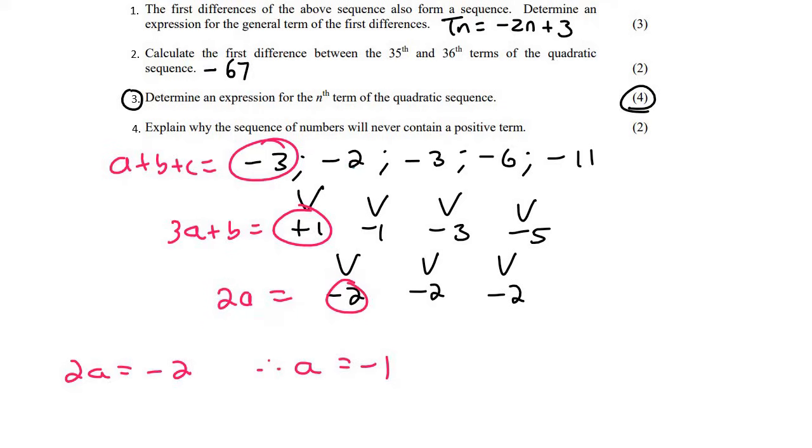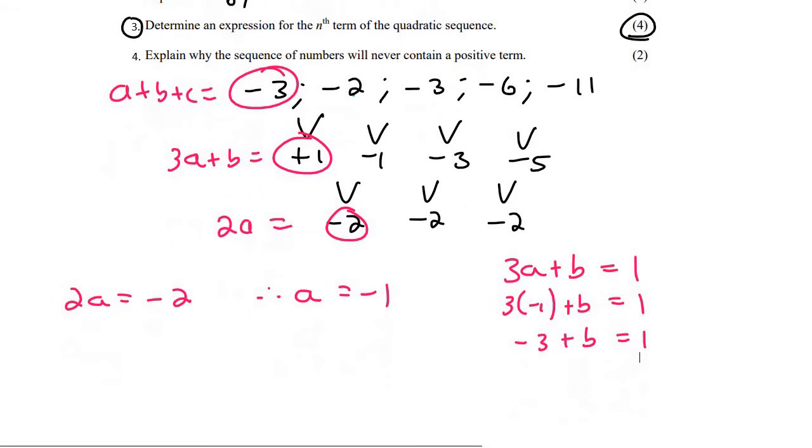So now what we do is we go up to the next level. So we can say 3A plus B equals to one, but now A is already minus one. And so that's minus three plus B equals to one. And if you had to solve this, you would find that B is equal to four.